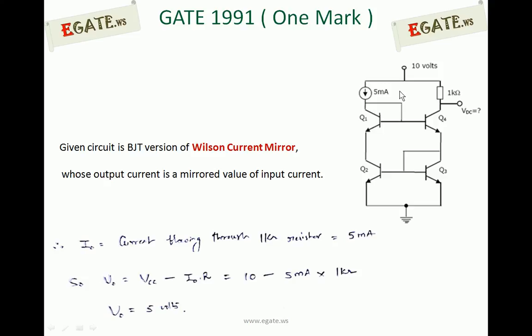It is basically a current mirror whose output current is the same as input current if all transistors are identical in their W by L ratios. As the given transistors are identical, the output current flowing through the 1 kOhm resistor is the same as the input current, which is 5 mA.